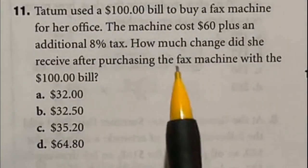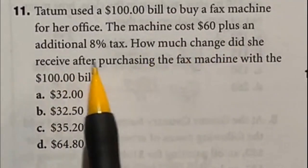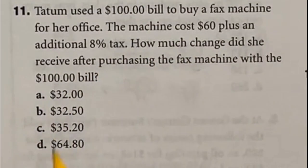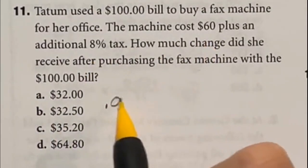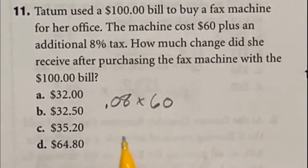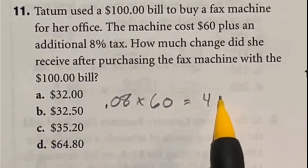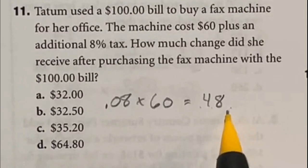So Tatum used a $100 bill to buy this machine. It was $60 plus an additional eight percent tax and they want to know how much change she gets. Well first off let's find out the eight percent. To find a percent of a whole you can switch this to a decimal that would be 0.08 and you multiply it by the whole. So in this case 60. When you do eight times six that's going to give you 48 and with the decimal place over twice we would move it over twice but then move it back one because of the zero with the 60. So $4.80 is the tax.